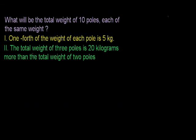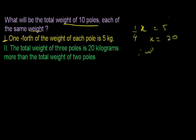Next problem: What will be the total weight of 10 poles, each of the same weight? Statement one: one-fourth of the weight of each pole is 5 kg. Let the weight of each pole be X. Therefore X divided by 4 equals 5 kg, so the weight of one pole is 20 kg. The weight of 10 poles is 20 into 10, which is 200 kg. Yes, I got the answer from statement one alone.